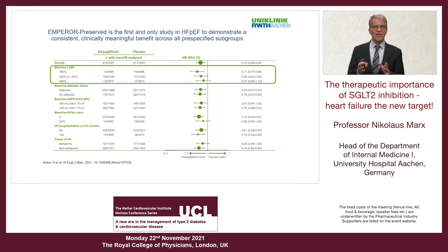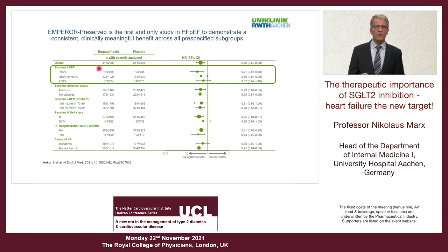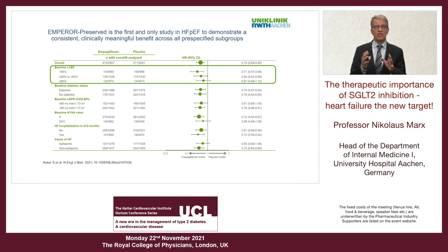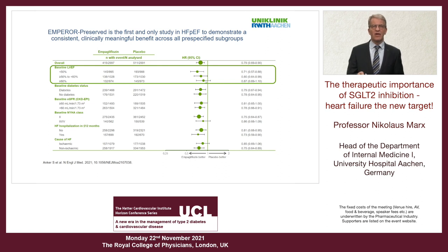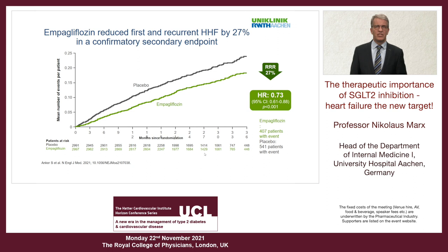Looking at subgroups by ejection fraction — below 50%, 50–60%, and above 60% — the effect is very consistent across all three groups. It seems, and this is hypothesis-generating, that the effect may be most prominent in patients with EF below 60%, but additional analyses are needed. Otherwise, all results fall to the left of the line of unity, confirming a robust and consistent effect across all pre-specified subgroups.